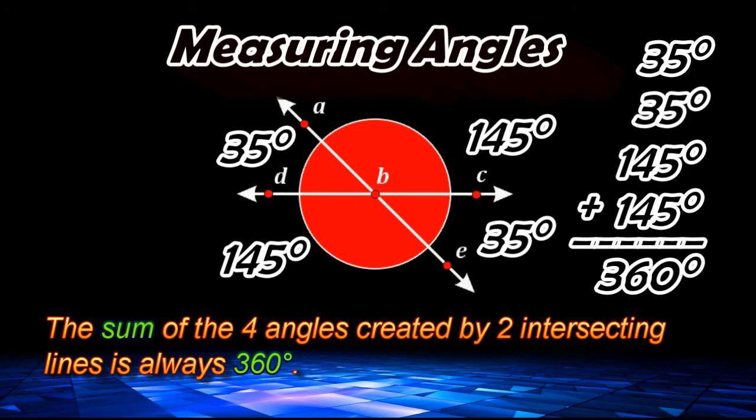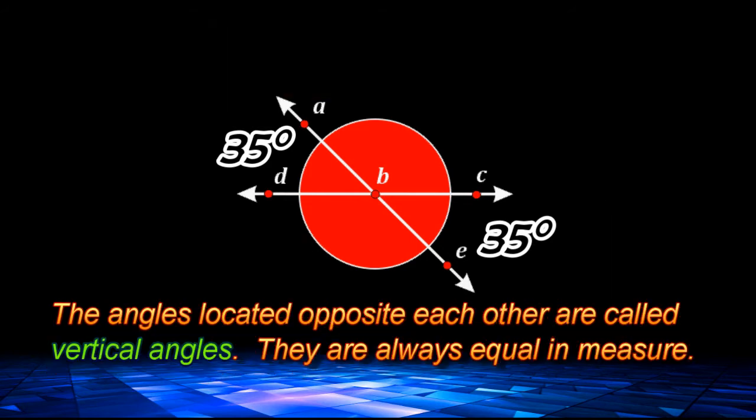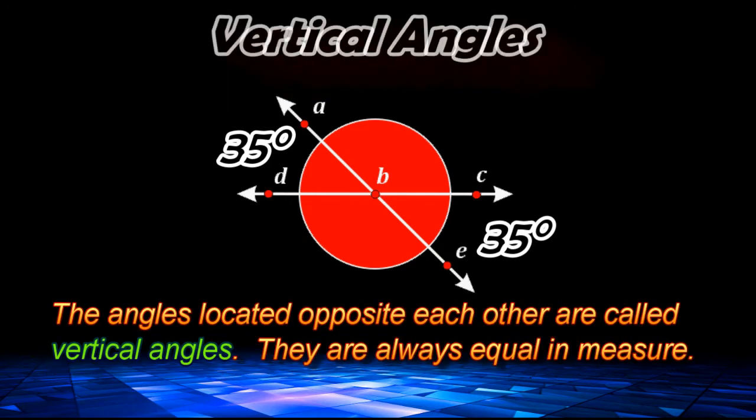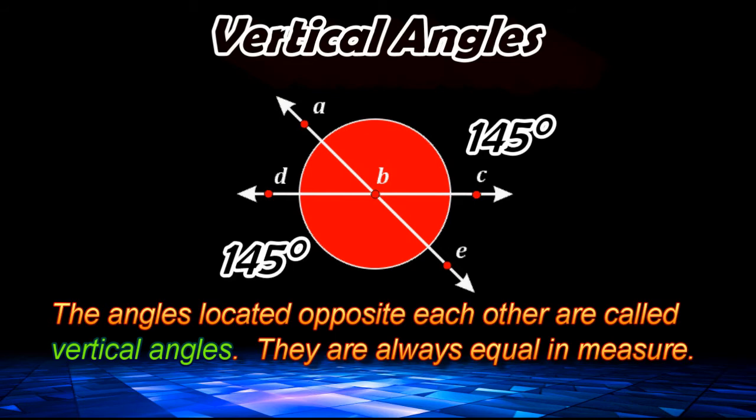Now, notice that the angles that are directly opposite from each other are identical. These angles are called vertical angles. Vertical angles are always equal in measure.